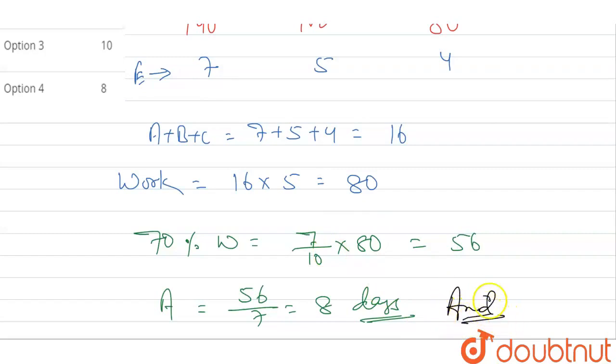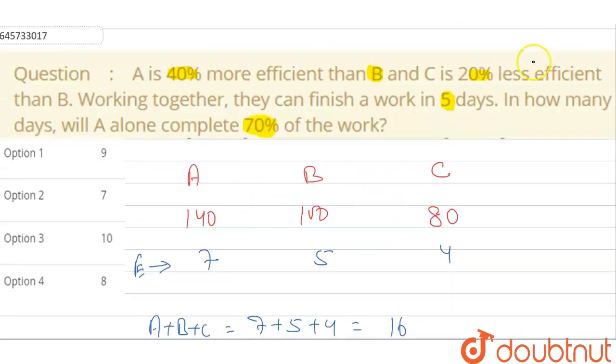This is the answer. That means A will finish 70% work in 8 days. Which option? Option 4 is the right answer. So I hope you understand. Thank you.